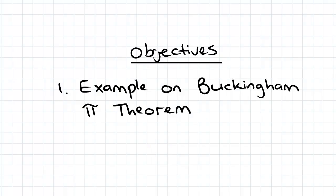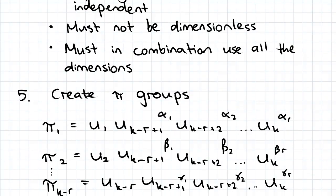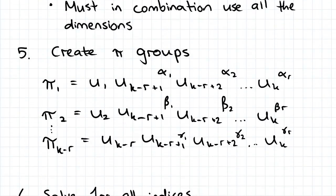Hi guys, we're continuing on from the previous video looking at an example on the Buckingham Pi theorem. We've completed the first four steps, so we're up to creating pi groups. We found how many repeating variables we have, we've identified what the repeating variables are, and we found out that we need to construct five pi groups.